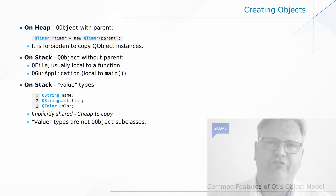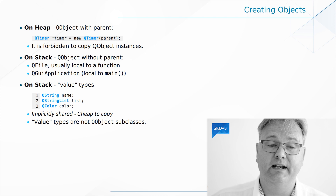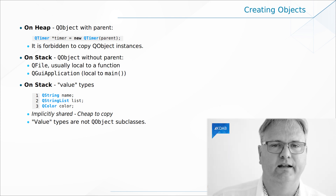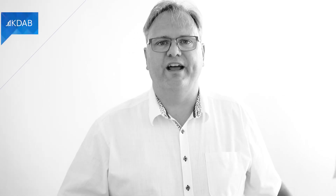In my years of teaching Qt, I have seen many people try to allocate a QString using `new`. The reason is that they look at Qt code and see that I write `new QLineEdit`, `new QTextBox`, `new Q-whatever`, and they conclude that anything starting with Q must be allocated using `new`. But that's not entirely true — it's anything that inherits from QObject that should be allocated using `new`.